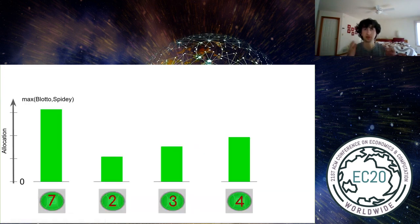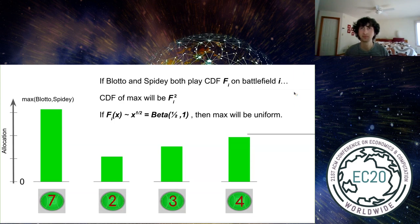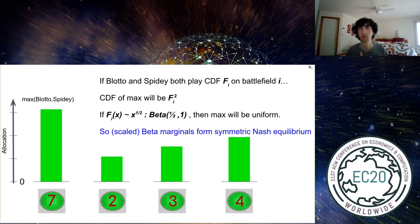Okay, great. Now let's think about the three-player case. In the three-player situation, what are the marginals we want? Well, suppose Alice is facing two other players, named Blotto and Spidey. All Alice cares about for each battlefield is the maximum play of Blotto and Spidey. That's the only information that's relevant to her, given that they have specific strategies. Now, if Blotto and Spidey both play a certain CDF, the same CDF, f sub i, on the battlefield i, then the CDF of their maximum will be the square of this CDF. It's a simple property. So therefore, if they each play a distribution proportional to x to the one-half, which is a beta distribution, then their maximum will be uniform and will, by the same logic as in the two-player case, find that these marginals form a symmetric Nash equilibrium.